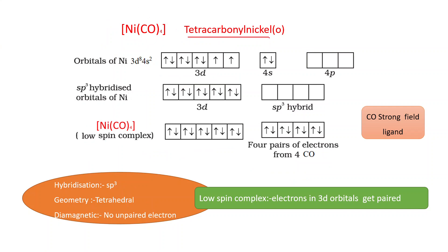Another nickel complex is tetracarbonylnickel(0), [Ni(CO)₄], where nickel is in the zero oxidation state with configuration 3d⁸ 4s². Hybridization is sp³. CO is a strong-field ligand; in its presence, electrons from 4s shift to 3d — one d orbital becomes vacant and those two electrons pair in the d orbitals, leaving 4s vacant. Then 4s and three 4p orbitals hybridize to give four sp³ hybrid orbitals that accept four pairs of electrons from four CO groups. This is a low-spin complex — hybridization sp³, geometry tetrahedral, diamagnetic with no unpaired electrons.